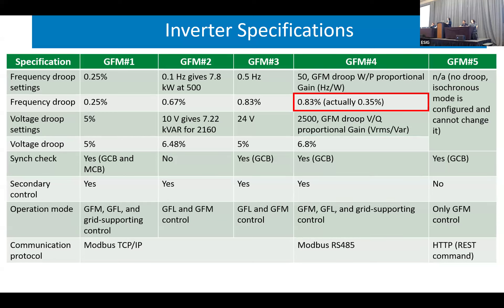After translating all droop definitions to a common language — frequency droop translation — you can see the droop percentage for each inverter. Grid-forming four has virtual impedance control that shifts the droop. By default it should be 0.83%, but it's actually 0.35%. Similarly, voltage droop uses different language that needs translation. We also checked if inverters have sync-check capability — four out of five have it. Grid-forming two does not, so we had to use an SCF 7451 sync-check relay to close the breaker and synchronize to the external system.